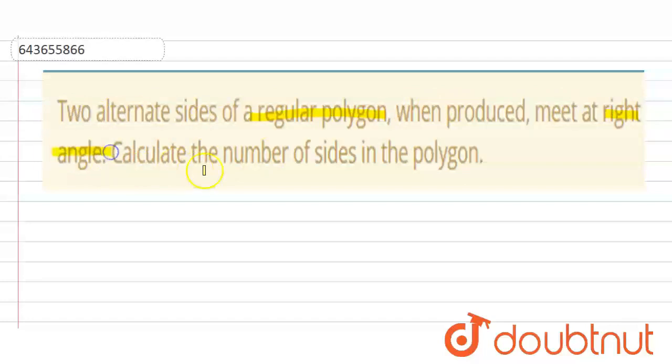Calculate the number of sides in the polygon. Now suppose that there are any two alternate sides, let this be one side and this be the another side. If they meet at a certain angle,